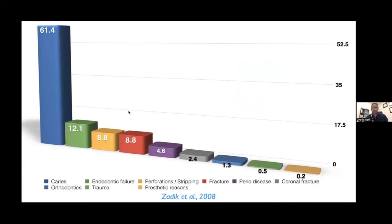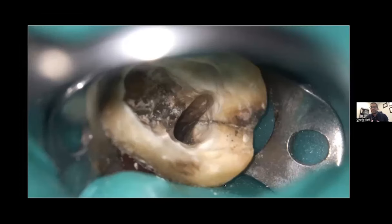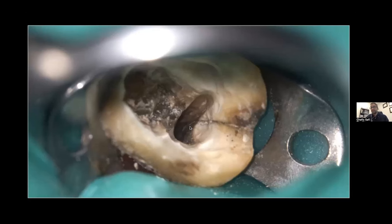Furthermore, challenges with traditional instrumentation include a lot of torque and stress created against the root canal walls while using these round files. A study by Zadig in 2008 found that about 9% of endodontically extracted teeth were caused by fracture in the root canal system. Traditional files can create a lot of torque and stress on the root canal walls, which challenges us to clean not only effectively but safely, without causing thinning of the root canal walls.